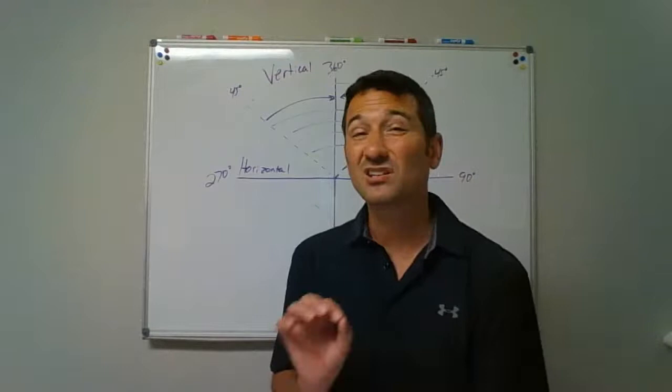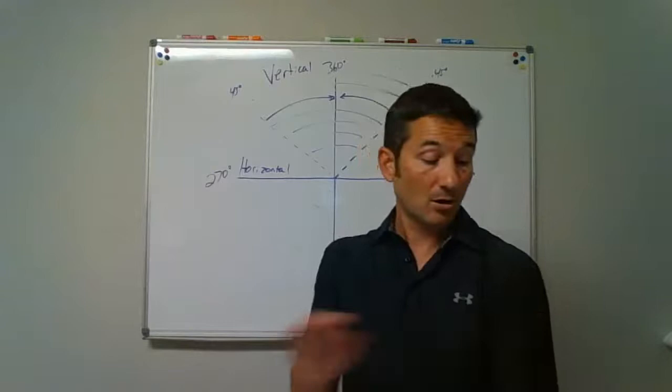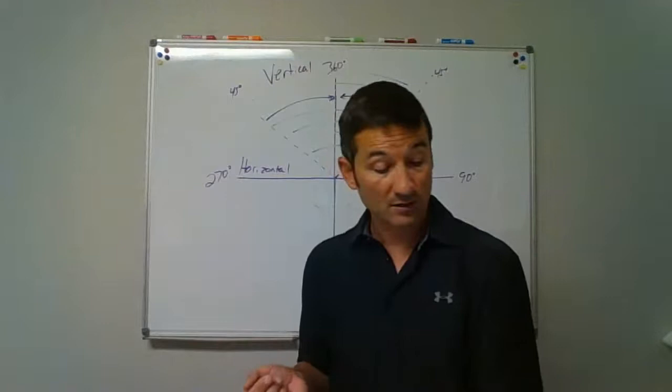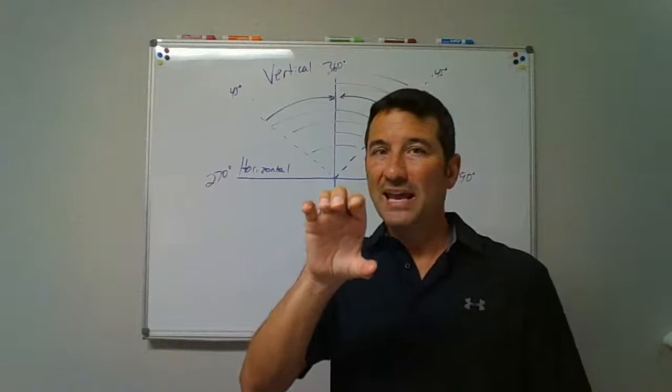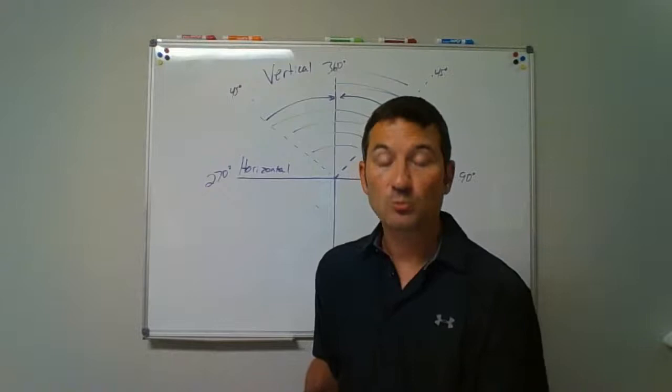Lead free, as defined in the code, means a weighted average of no more than 0.25% lead to be considered lead free. For lead-free solder or flux, it's just 0.2%. A mechanical joint is a joint between different materials using a rubber band-style coupling with hose clamps that you tighten down — as opposed to a glued or soldered connection.